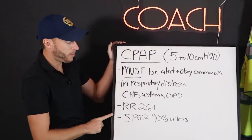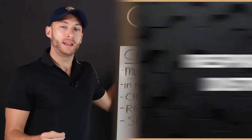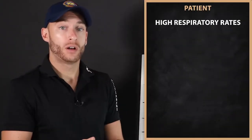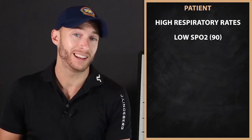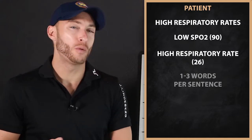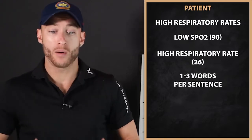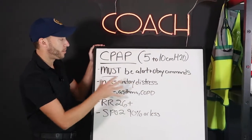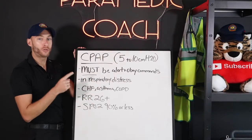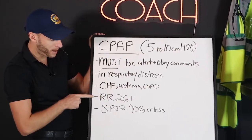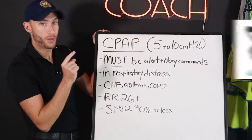Here are some things to remember. They need to actually be in respiratory distress — a high respiratory rate, a low SpO2 like 90, a respiratory rate like 26. Speaking in one or two word sentences, tripoding, signs of stress like accessory muscle use and retraction. A patient who's awake and can obey commands, who's in respiratory distress, with an elevated respiratory rate and a low SpO2 — they're the candidate for CPAP.